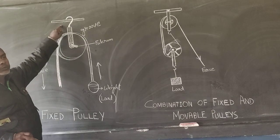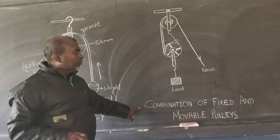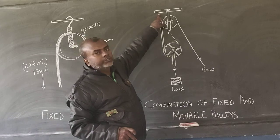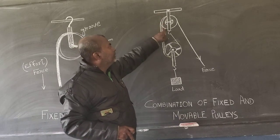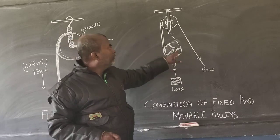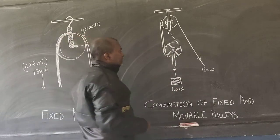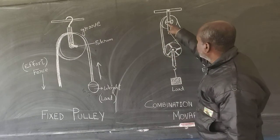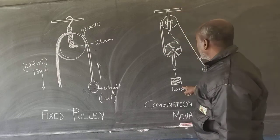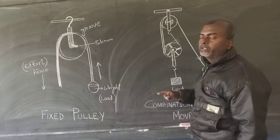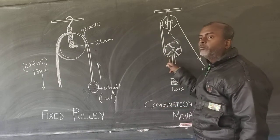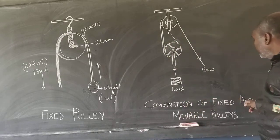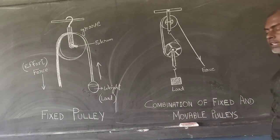This is an example of a fixed pulley, wherein the pulley is fixed to a fixed support. Another example is the combination of a fixed and a movable pulley. The top pulley is a fixed pulley since it is fixed to a support. The fixed pulley is attached to another pulley which is not fixed — it is free to move. If force is applied downward, this movable pulley along with the load will move upward.